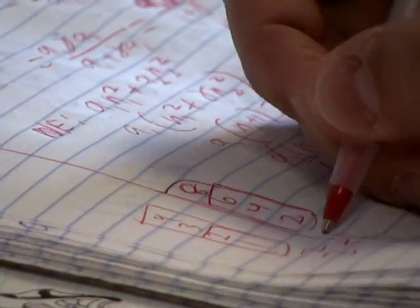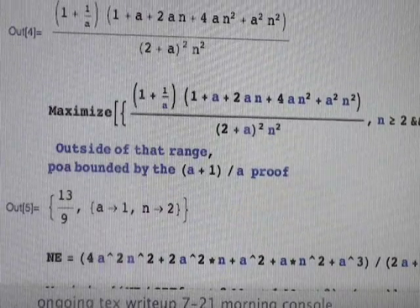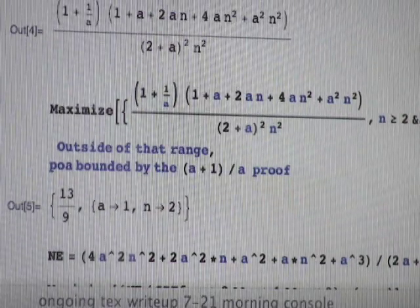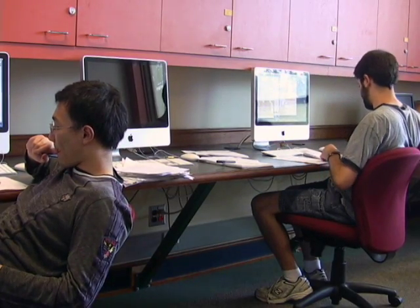Game theory is kind of related to economics. It's the study of basically any kind of strategic interaction between people in economics, business, or social interactions. In game theory, you assume that people are exactly rational and exactly self-interested, so they're going to do exactly what's best for them, but their outcome depends on the choices that other people make.